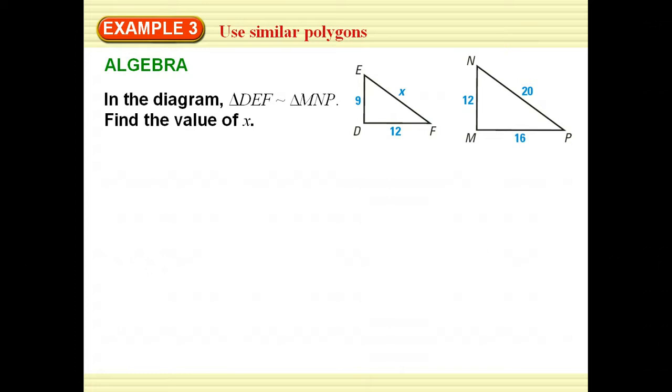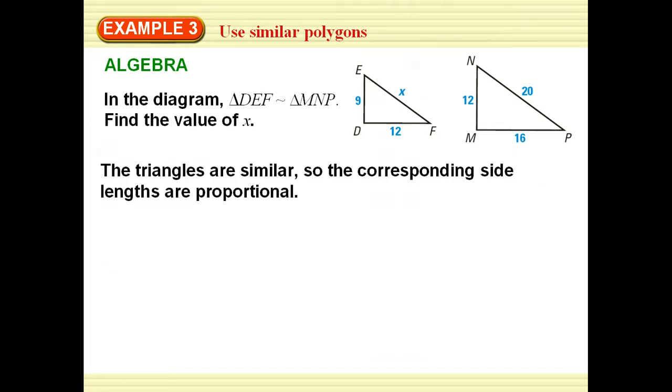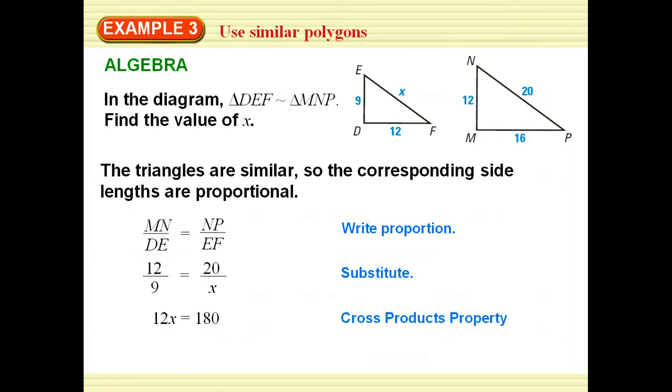In this diagram, I've got two triangles that are similar, and we want to find X. So what I need to do is set up a proportion, find my scale factor. Their corresponding lengths are proportional, so MN is to DE as NP is to EF. I write that proportion and solve it, and I end up finding what X is.